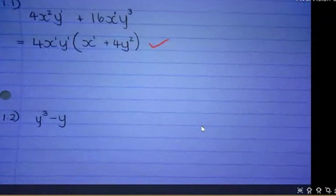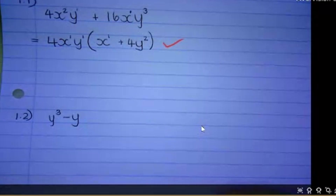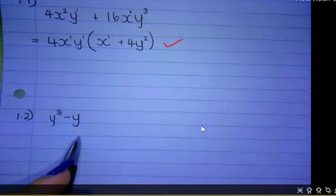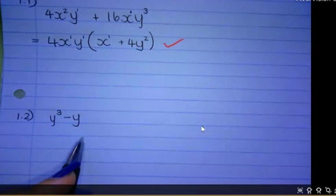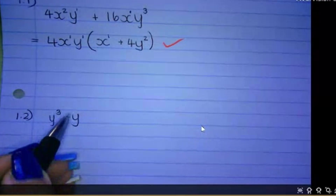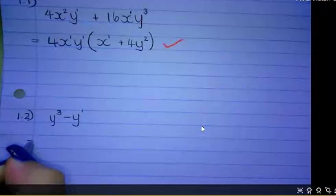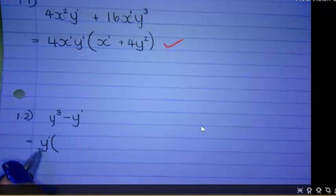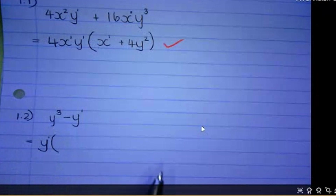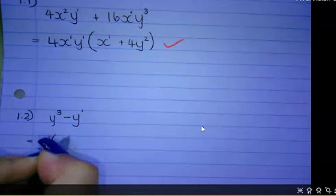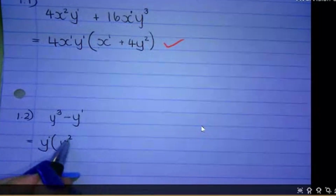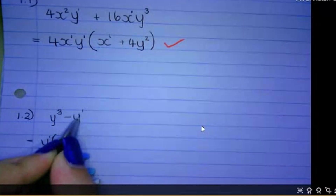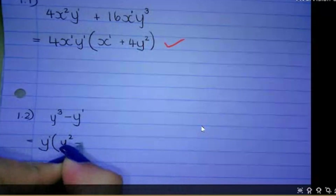Next problem: y to the power of 3 minus y. Remember, highest common factor first always. There are no big numbers, so we take out a variable as the HCF. When taking out a variable, take out the one with the lowest exponent — y to the power of 3 or y to the power of 1 — so we take out y to the power of 1. Open the leftovers bracket: what must I multiply y by to get y cubed? You take out one y, leaving y squared, because adding the exponents gives y cubed. For the second term, y divided by y gives 1.